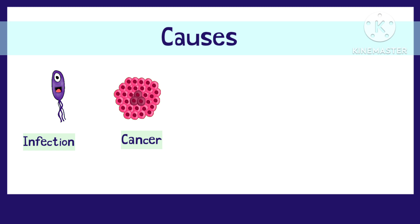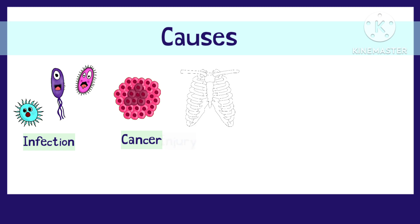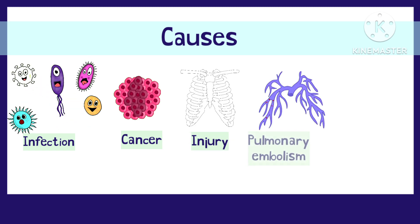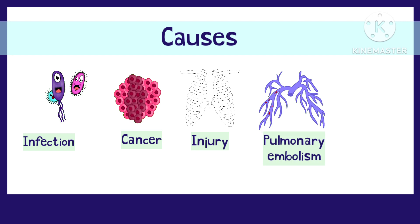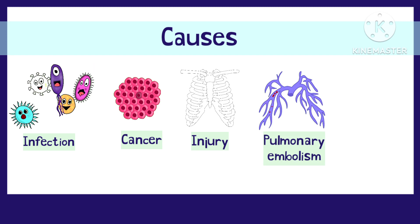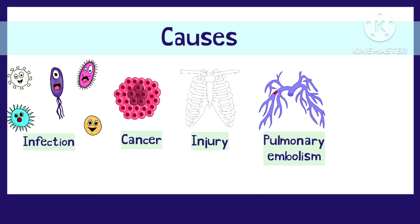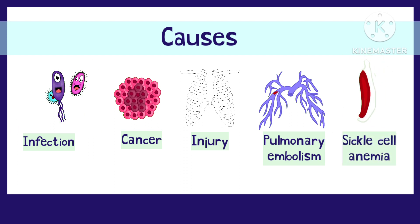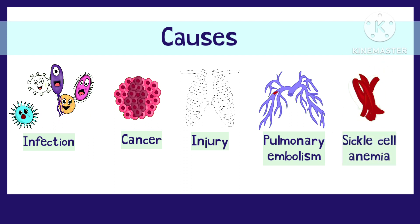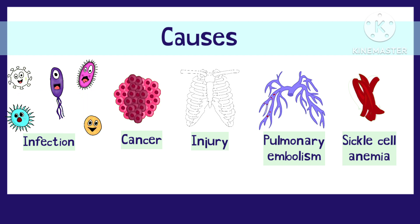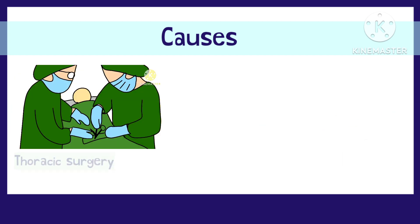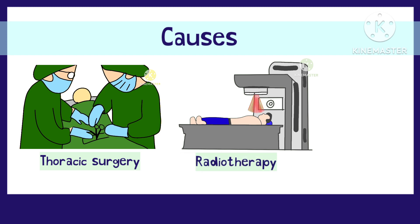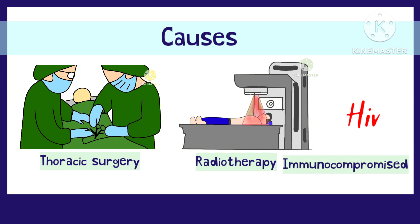Lung cancer. Injury to the ribs and thoracic cavity. Pulmonary embolism — a condition in which a clot forms inside the pulmonary arteries. Sickle cell anemia can also cause pleurisy due to the ease with which it can form a clot. Thoracic surgery, chemotherapy and radiotherapy, immunocompromised state especially in HIV and AIDS, and autoimmune conditions like rheumatoid diseases.